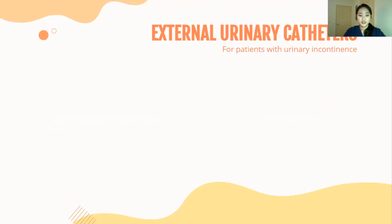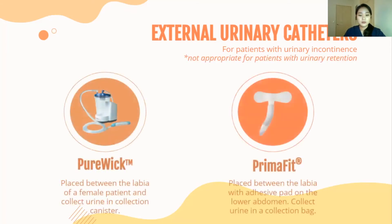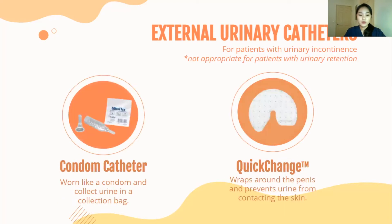The next alternative is external urinary catheters. Warning: these devices are not appropriate for patients with urinary retention. For female patients, PureWick is placed between the labia to collect urine in a collection canister. This device was commonly used at UCIMC but is transitioning to PrimoFit, which is placed using the same procedure, though it has an adhesive pad that attaches to the patient's lower abdomen for better securement. For male patients, PrimoFit is used. Additionally, a condom catheter and QuickChange can be used for male patients, though the condom catheter collects urine in a collection bag while the QuickChange does not.